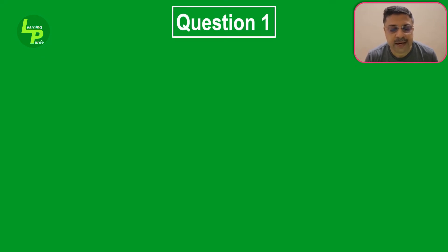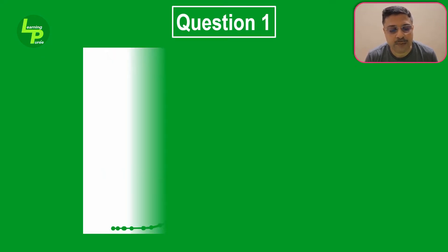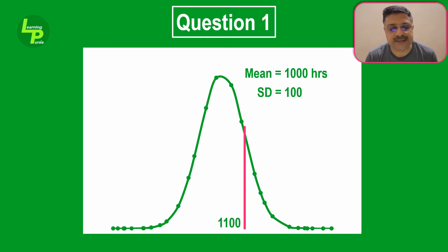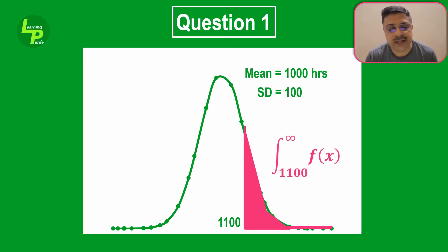With these three points being our guiding light, we will address the three questions asked by the quality testing department. From the first problem statement, we need to know the number of bulbs with lifespan of 1100 hours or more. Graphically speaking, it means that if we have fixed one point at 1100 hours, then we need to find the sum of all probability under the curve from this point till the hypothetical end of the curve — in other words, the integral of the area under the curve from 1100 hours to the end of the curve.